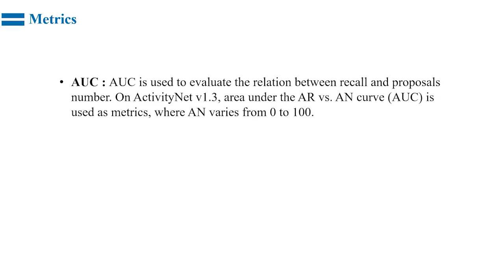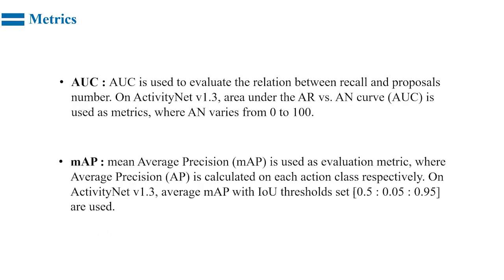Here I will introduce the metrics of the temporal action detection task. AUC is used to evaluate the relation between recall and proposal number. On ActivityNet, average MAP with IoU thresholds set from 0.5 to 0.95 with a step of 0.05 is used as the evaluation metric, where AP is calculated on each action class respectively.